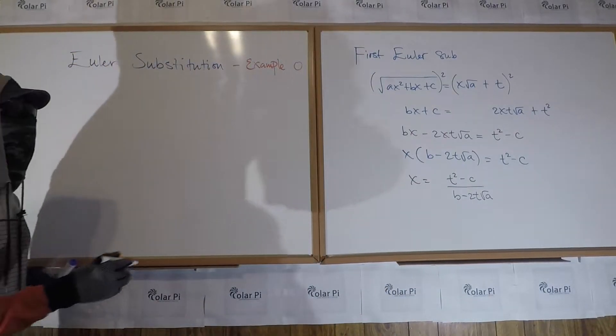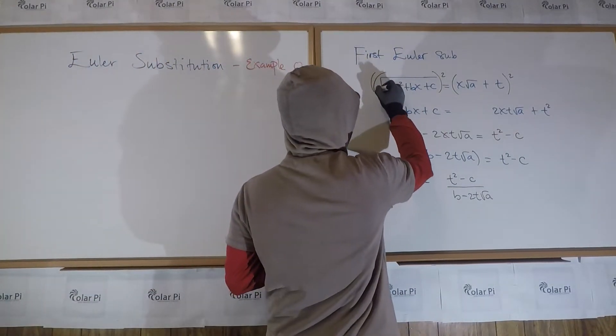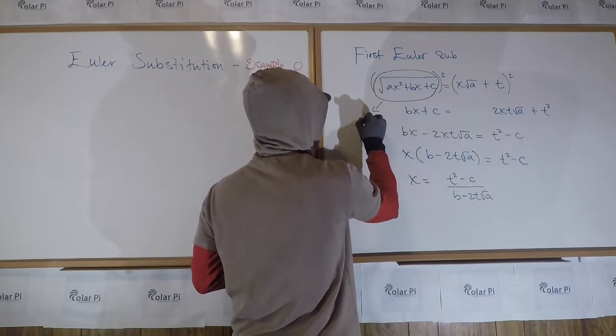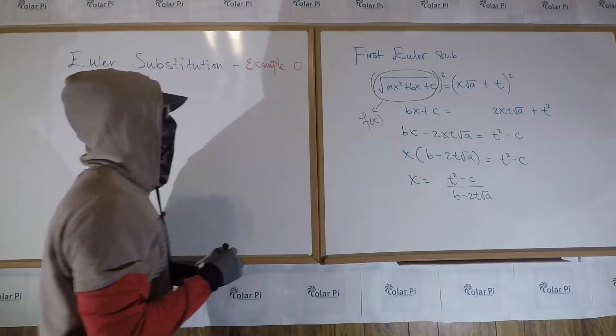And then next I could factor out an x from the left side and write that what I have is the same as x times b minus 2t root a equals t squared minus c.